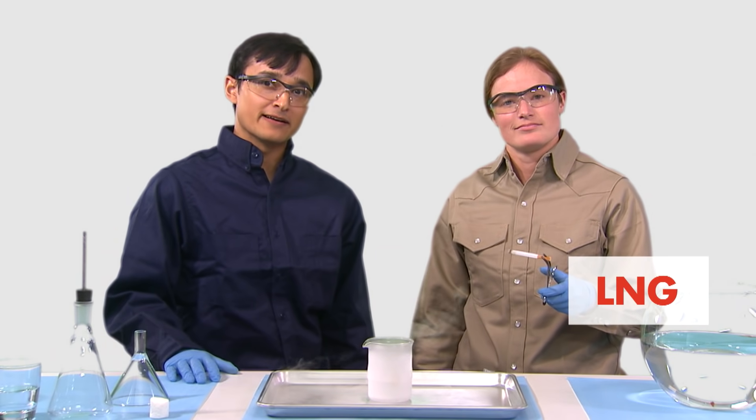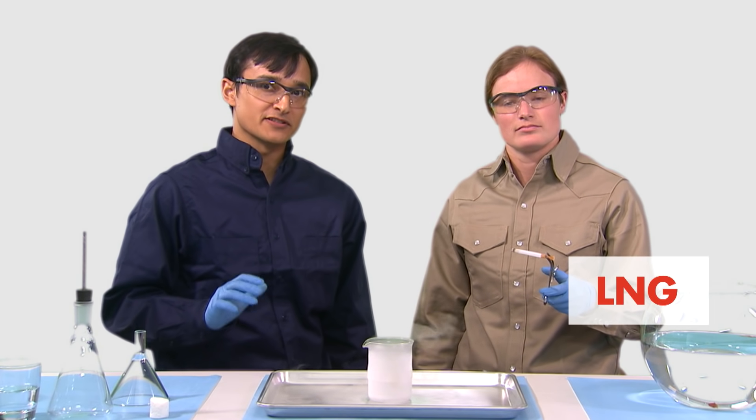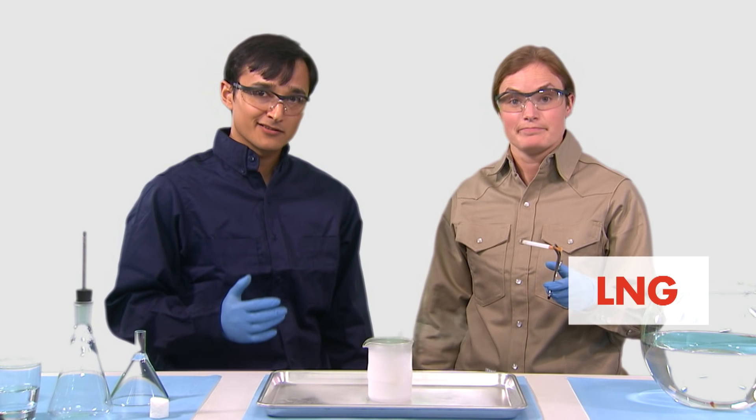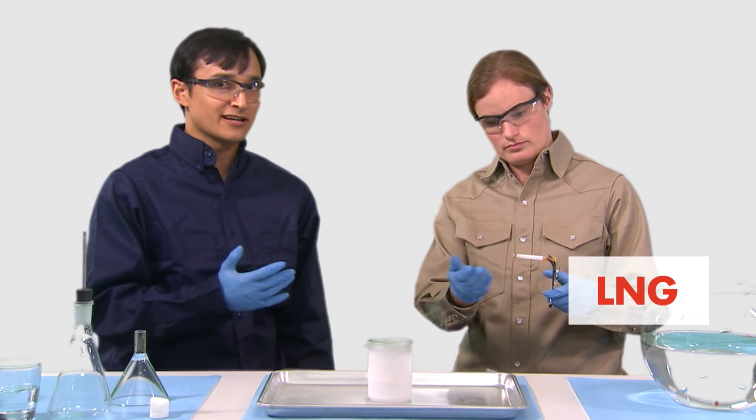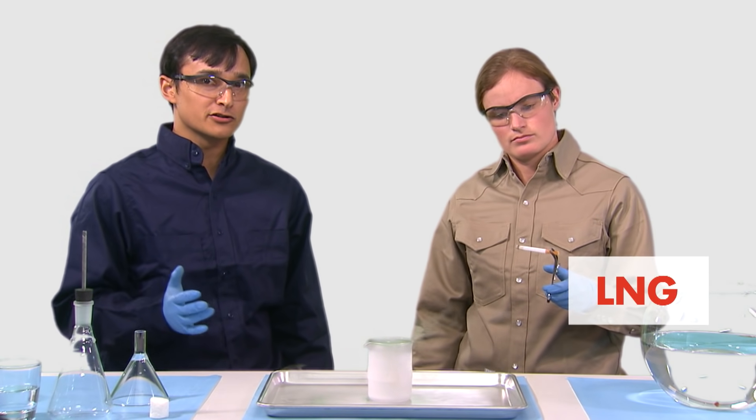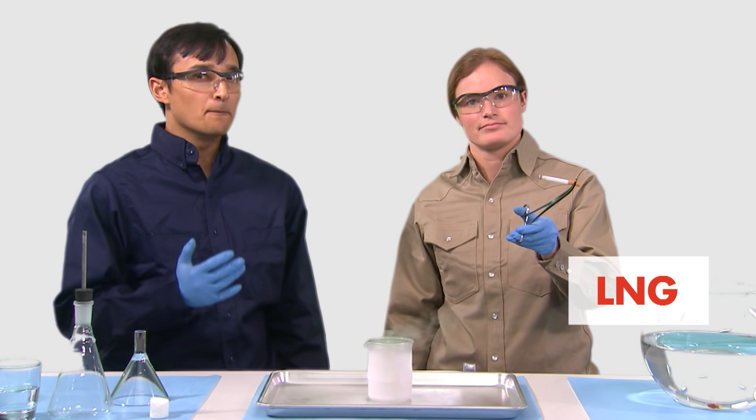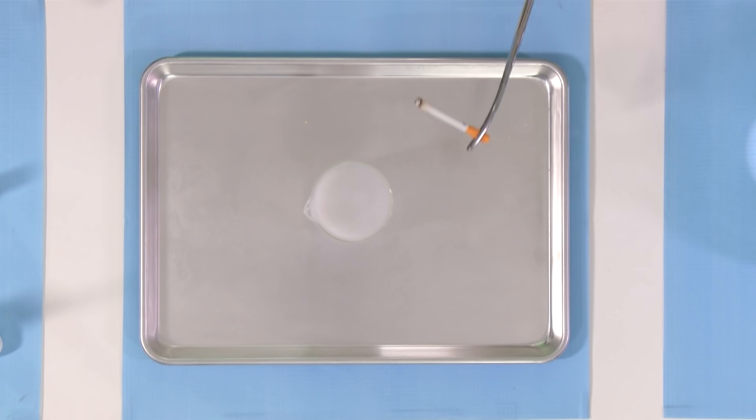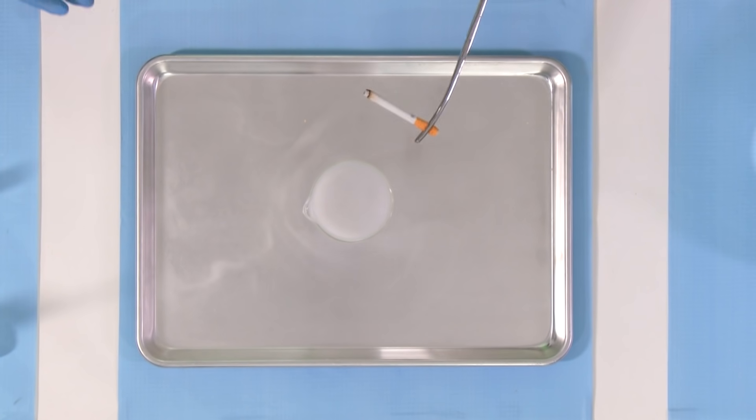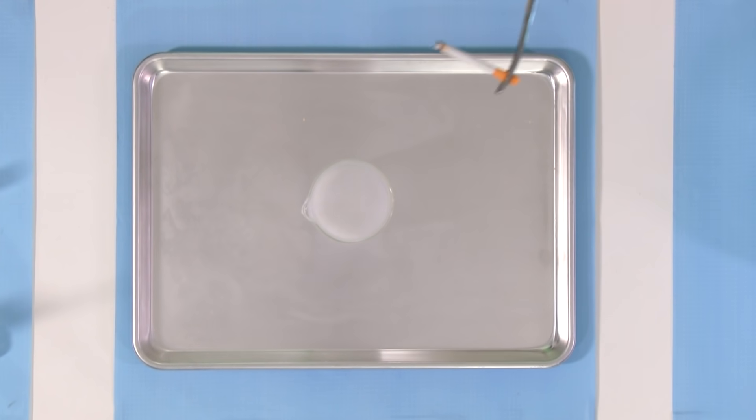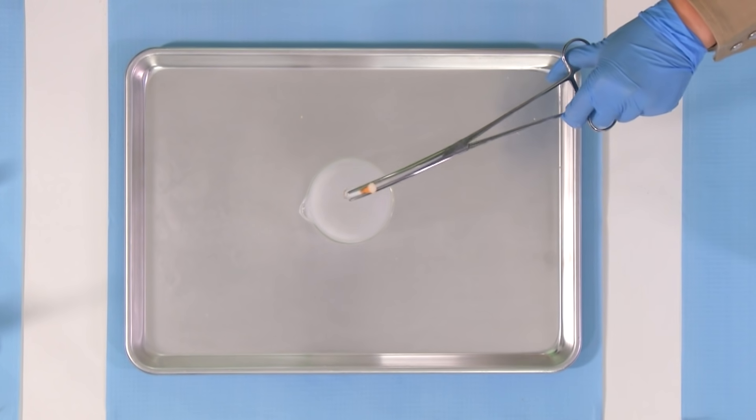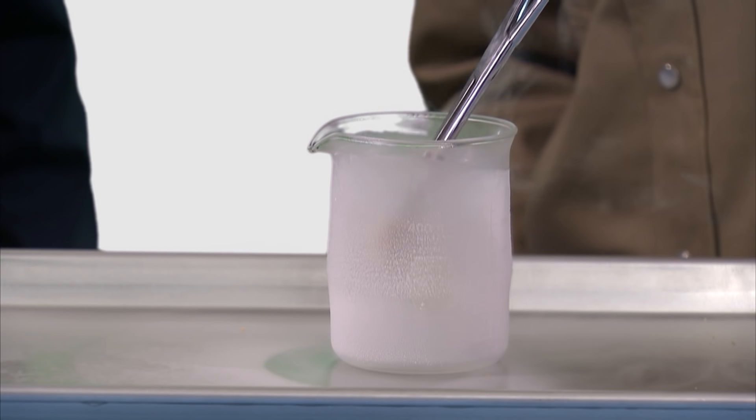LNG vapors will ignite only if the ignition source is more than 1,000 degrees Fahrenheit, or 500 degrees Celsius. That's pretty hot. The cigarette that Mariah is holding burns at a temperature of around 700 to 800 degrees Fahrenheit, or 350 to 450 degrees Celsius. Much lower than the temperature needed to ignite the natural gas. Which is why she can pass the red hot cigarette through the LNG vapors without even igniting it. In fact, Mariah can extinguish the cigarette in the LNG because there isn't enough oxygen in the container to keep the cigarette lit.